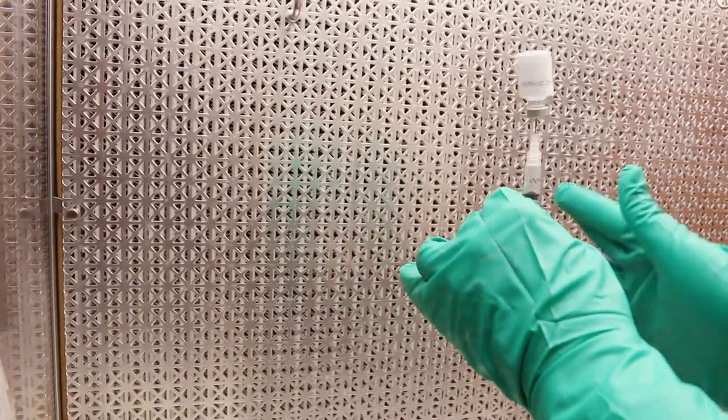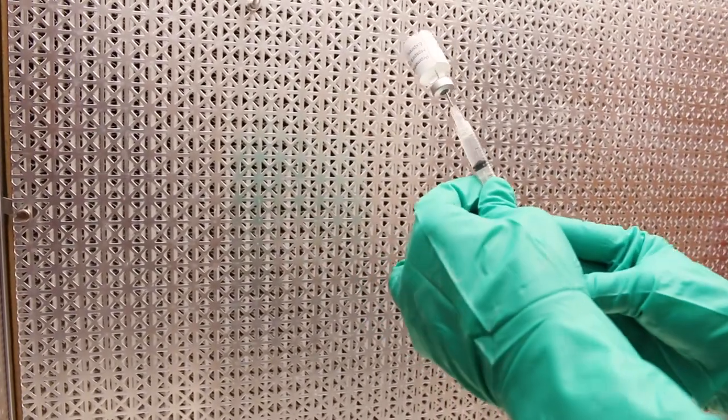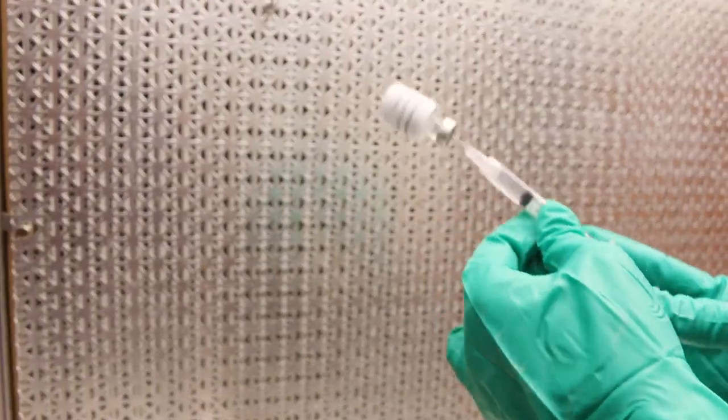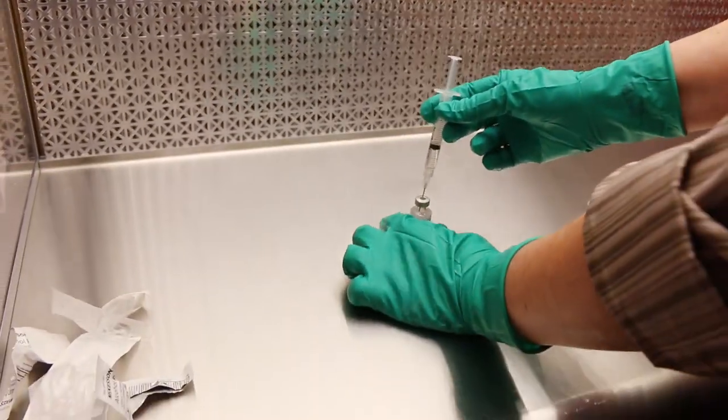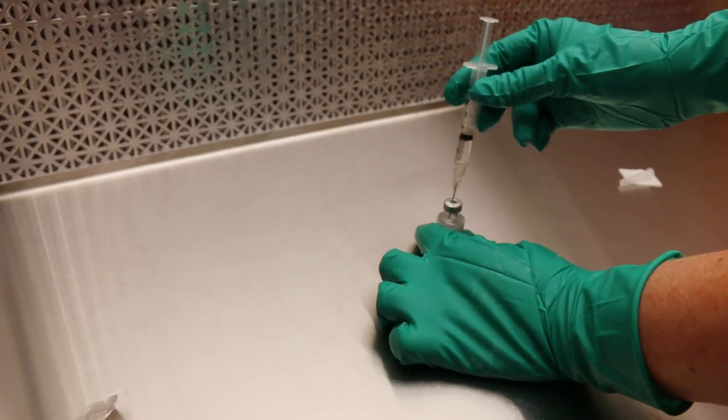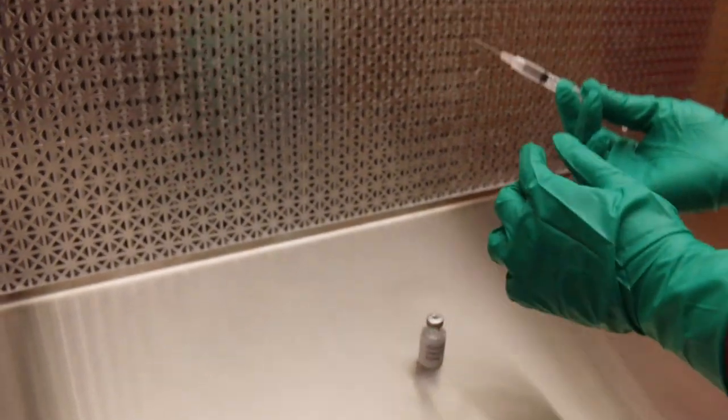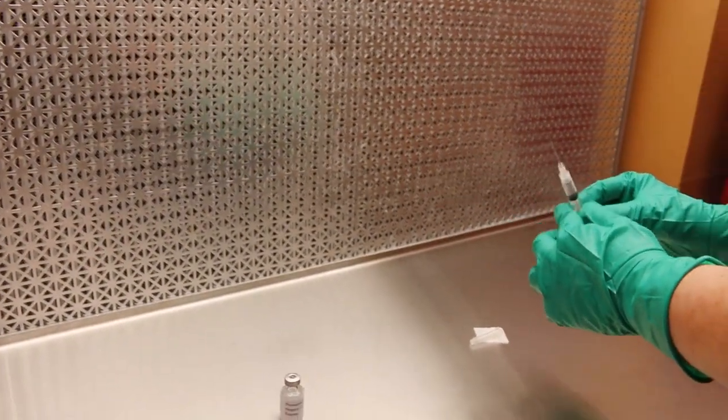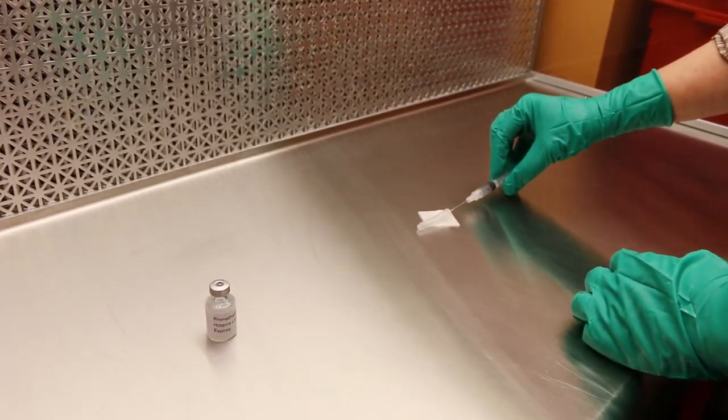Step twenty-two, return the vial with the syringe attached to the work surface using a counterclockwise motion and gently pull the syringe and needle from the vial. Step twenty-three, carefully recap the needle using the scoop method.